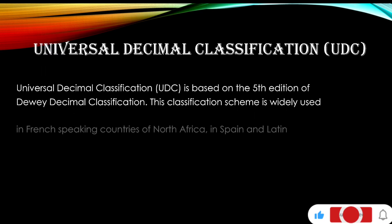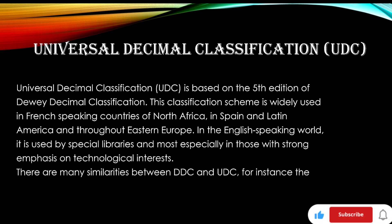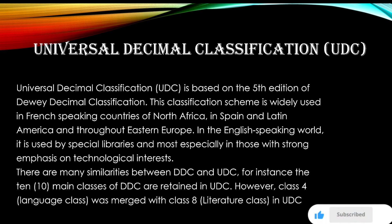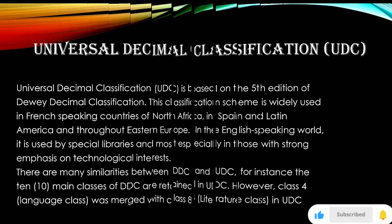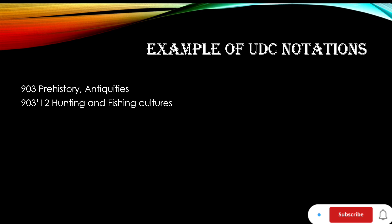The Universal Decimal Classification (UDC) is based on the 5th edition of the Dewey Decimal Classification. This scheme is widely used in French-speaking countries of North Africa, in Spain and Latin America, and throughout Eastern Europe. In the English-speaking world, it is used by special libraries, especially those with a strong emphasis on technological interest. The 10 main classes of DDC are retained in UDC; however, Class 4 — Language — was merged with Class 8 — Literature — in UDC. Example UDC notation: 903 — Prehistory/Antiquities; 903/1512 — Hunting and Fishing Cultures.